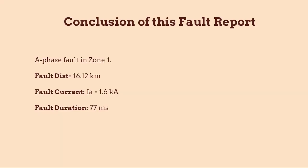The conclusion of this fault report is: the distance relay tripped on an A phase fault in zone 1. The fault distance was 16.12 km, fault current recorded is A phase fault current of 1.6 kA, and fault duration was 77 ms.